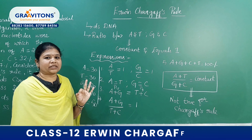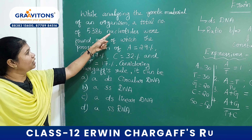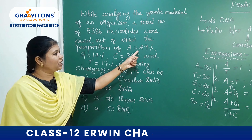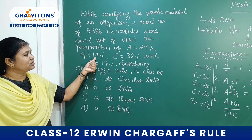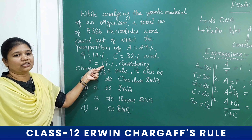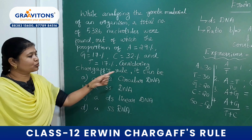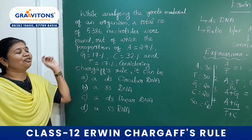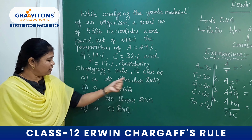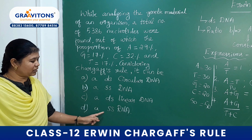The third way of questioning using Chargaff's rule: while analysing the genetic material of an organism, a total number of 5386 nucleotides were found. Out of these, Adenine is 29%, Guanine 17%, Cytosine 32%, and Thymine 17%. They are asking us to apply Chargaff's rule and conclude what kind of genetic material it is. The four options are: a double-stranded circular DNA, single-stranded DNA, double-stranded linear DNA, or single-stranded RNA.